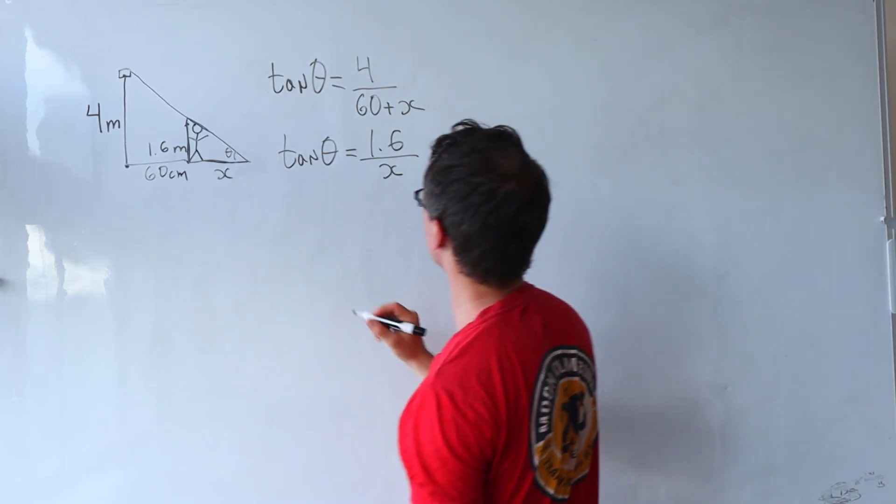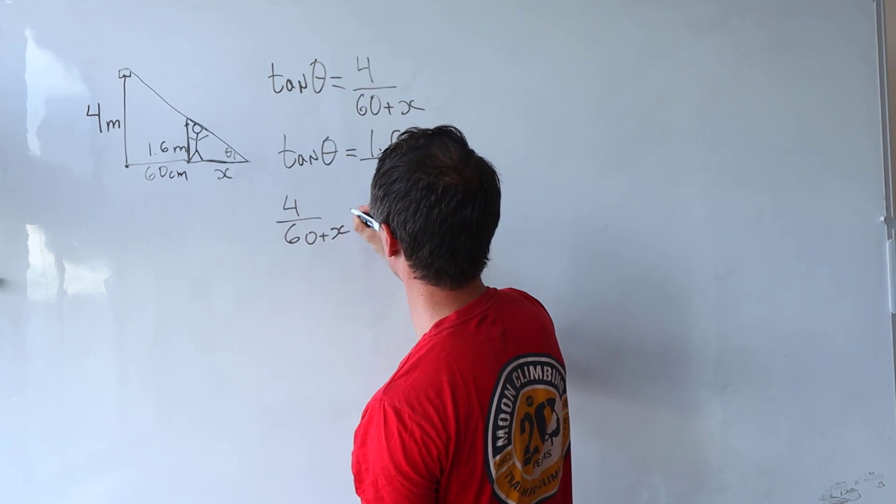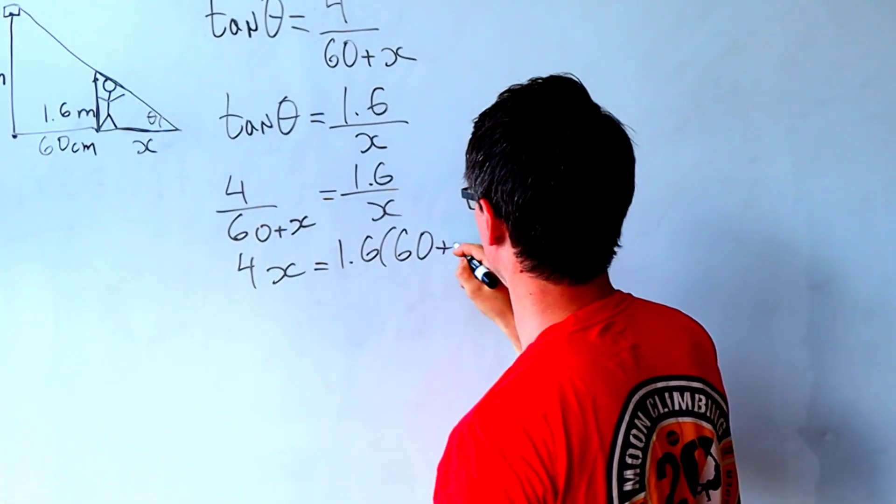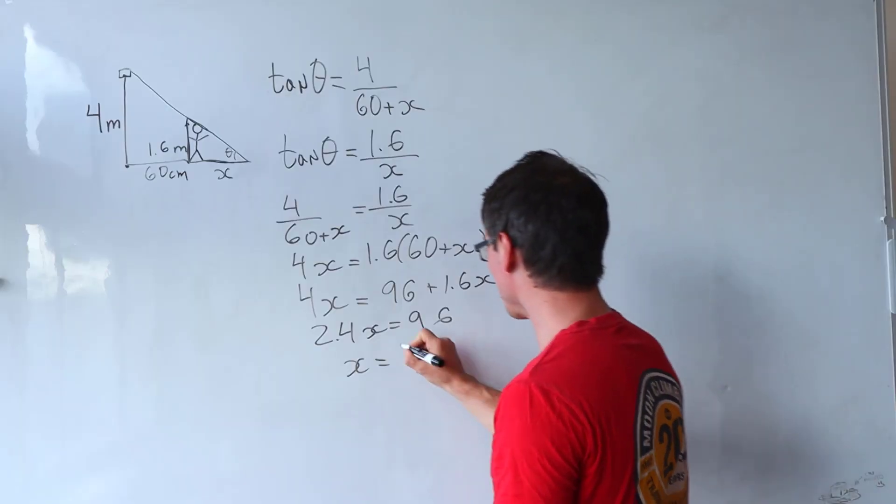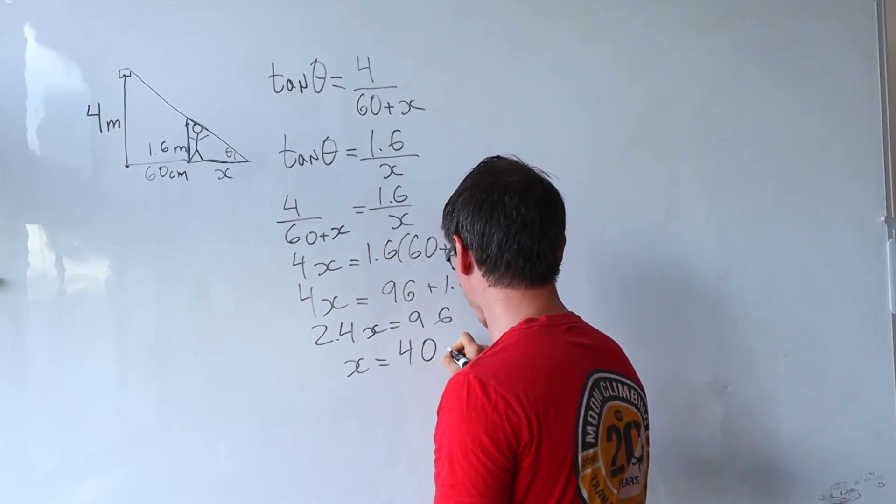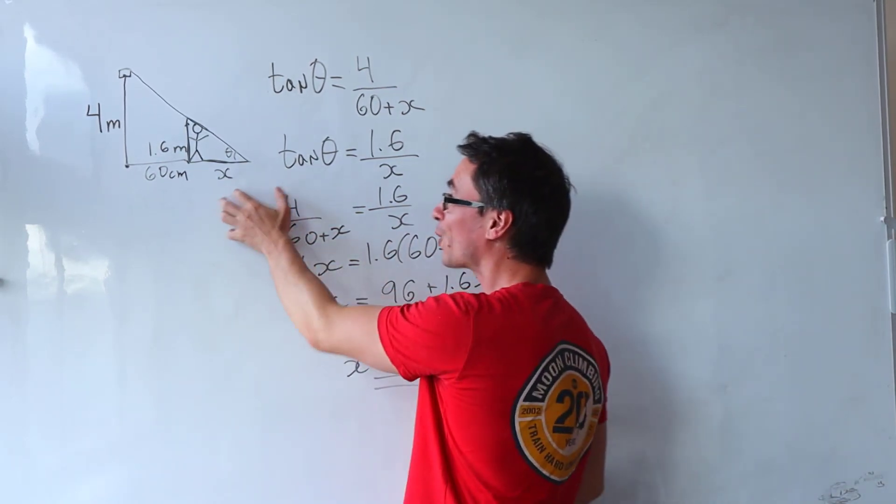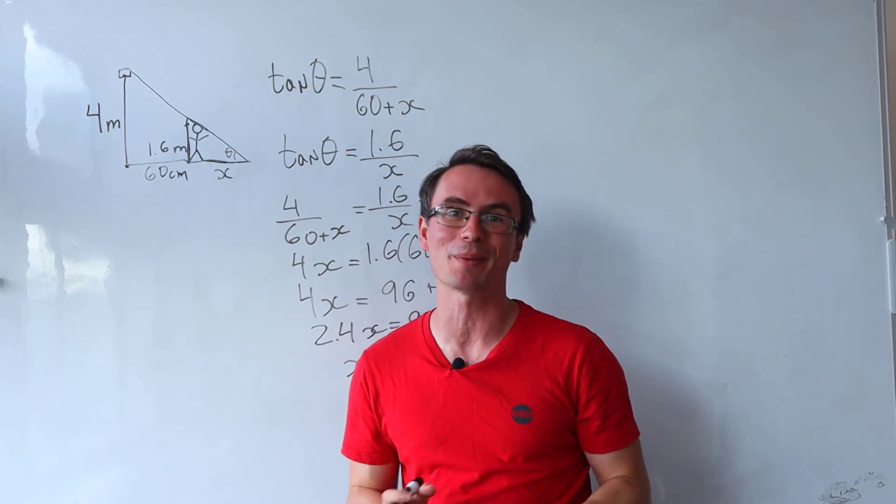Now let's set those two equal to one another. So what do we get? 4 over 60 plus x will be given by 1.6 over x. x will just be given by 40 centimeters. In other words, the speed of the shadow will be 40 centimeters per second with respect to the person.